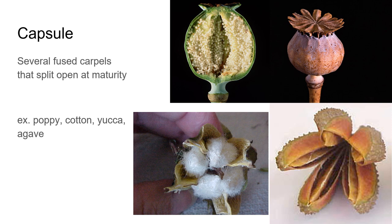A capsule is a very broad term for fruits where you have several fused carpels that are going to split open at maturity. Carpels can look very different from each other, so these are just a few examples with multiple carpels that were all fused together as part of the same fruit, splitting open at maturity. With cotton we can see very obviously it's splitting open at maturity. With poppies the openings are small — it doesn't split entirely open; instead each carpel has a little tear along the top and it waves in the wind dispersing little seeds like a pepper shaker.